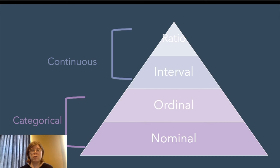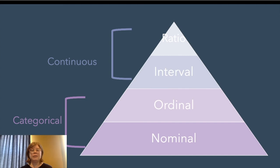The next level of measurement is ordinal, which is the same idea as nominal except that categories can be meaningfully ordered. An example here could be level of education: elementary school, middle school, high school, some college but no degree, college degree, graduate degree. These are finite categories, but we can order them — high school is more education than elementary school, and graduate school is more education than high school.